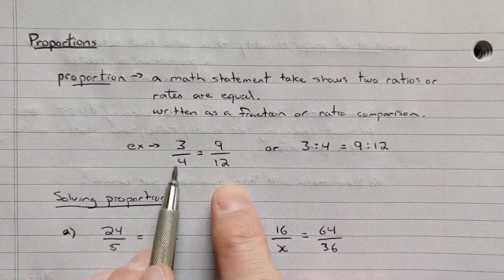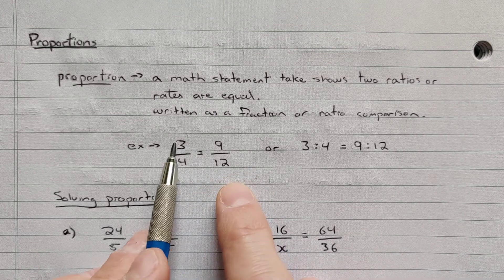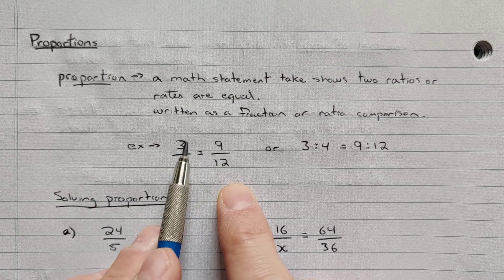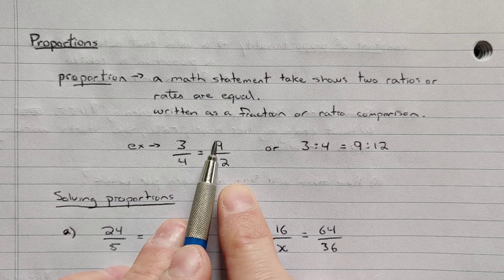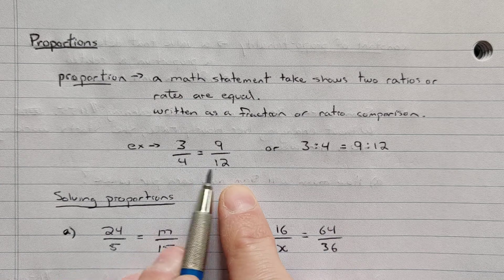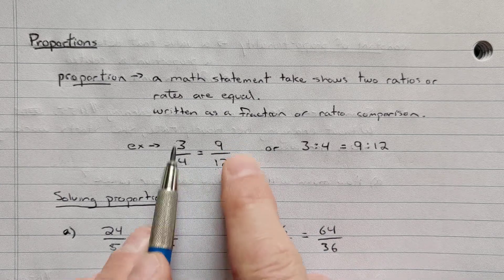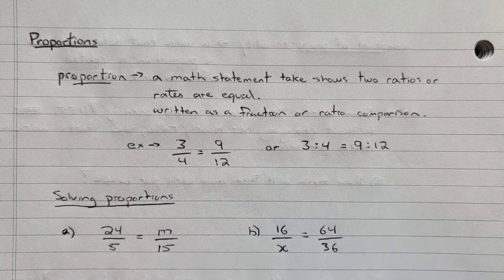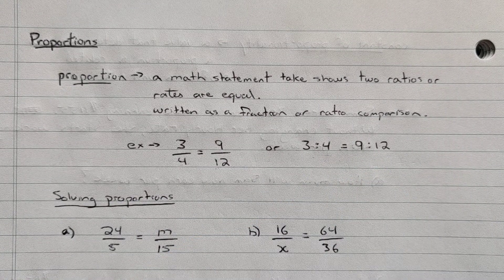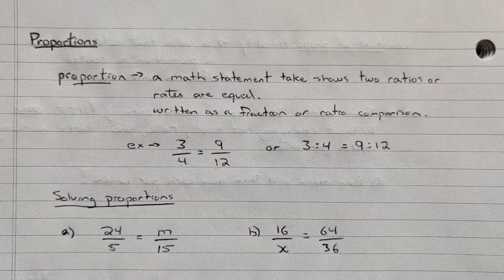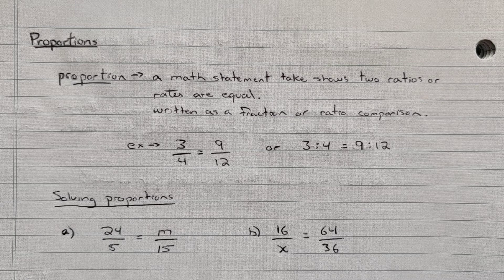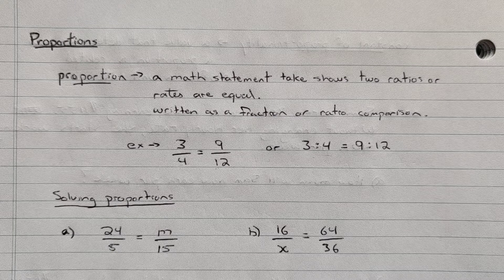So it can be either written something like this. So this is a proportion: 3 over 4 is equal to 9 over 12. If we multiply 3 by 3 we get 9. If we multiply 4 by 3 we get 12. So that is a comparison of them. You could write it as a ratio. Most often it's most convenient to work with these when they're written in fraction form, and you'll see in a moment here when we do some solving of proportions.